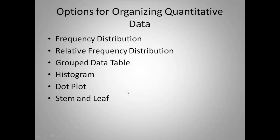Some options for organizing quantitative data: we can use a frequency distribution, relative frequency distributions, grouped data tables, which a group data table is just the combination of these two together. And then we can use a histogram, a dot plot, or a stem and leaf. Since we've already looked at frequency distributions and relative frequency distributions in group data tables when we did qualitative data, we're just going to jump to histograms and dot plots and stem and leafs.